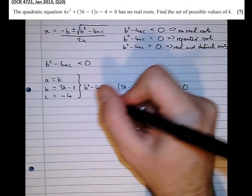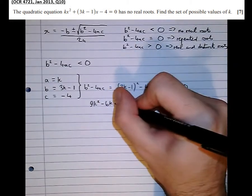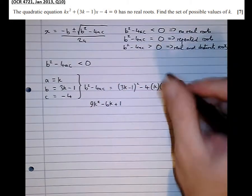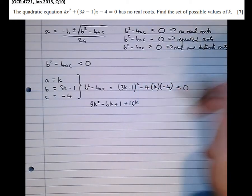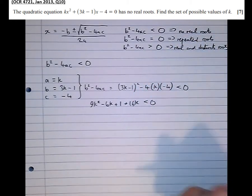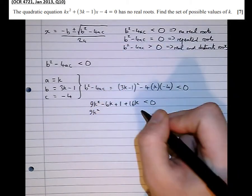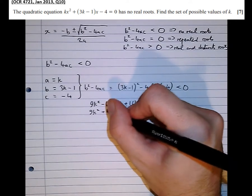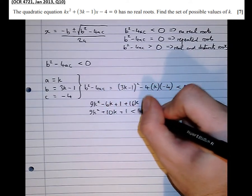So expanding this we get 9k squared minus 6k plus 1. Then multiplying this together we get plus 16k is less than zero. That simplifies to 9k squared. So minus 6k plus 16k is plus 10k plus 1 is less than zero.